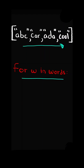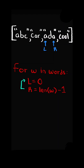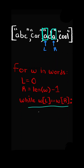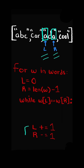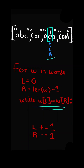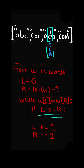First, we will iterate through each word and we will have two pointers, L and R, at the start and end of the string. While the values at the pointers are equal, the string could potentially be a palindrome, so we check the next set of characters by increasing L and decreasing R. Again, the values at L and R are equal. If the pointers L and R are equal or cross each other, then the string is a palindrome.